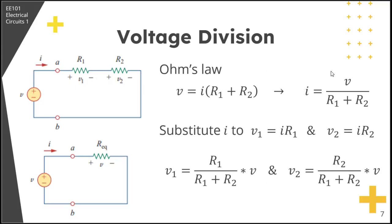If we substitute this expression of our current to the expression for V1 and V2, V1 becomes equal to I times R1, which becomes V1 equal to V over R1 plus R2 times R1. Then for V2, your I is V over R1 plus R2 times R2.